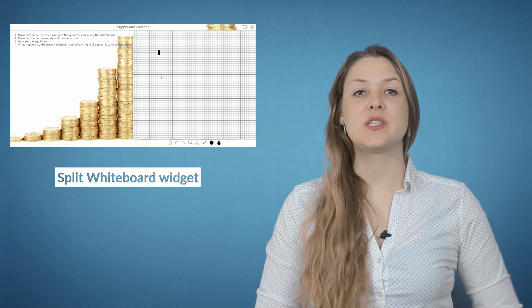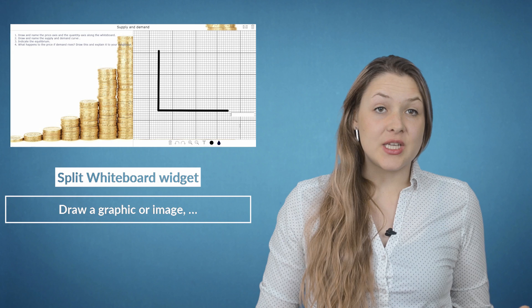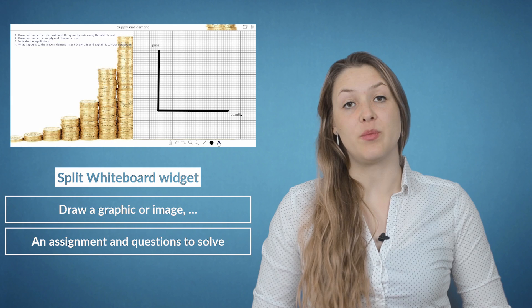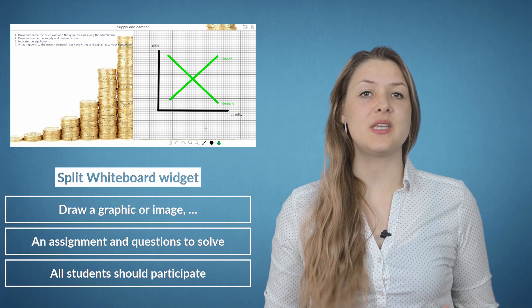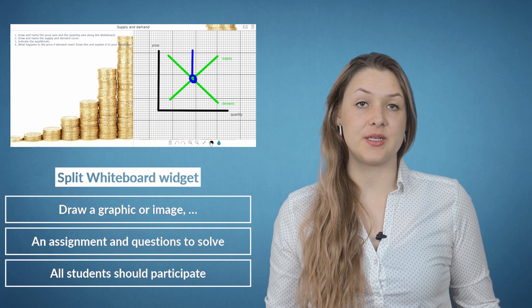You can use a Split Whiteboard widget to let your students draw a graphic or image. In the left section, you give your students an assignment and questions which they need to solve on the whiteboard. This means that all students should practice, and not just one student coming forward to solve the exercise as it used to be in a traditional classroom. In this widget, you can teach your students more about the market mechanisms: supply and demand. Besides this, there are many more other charts that you can use in this widget.